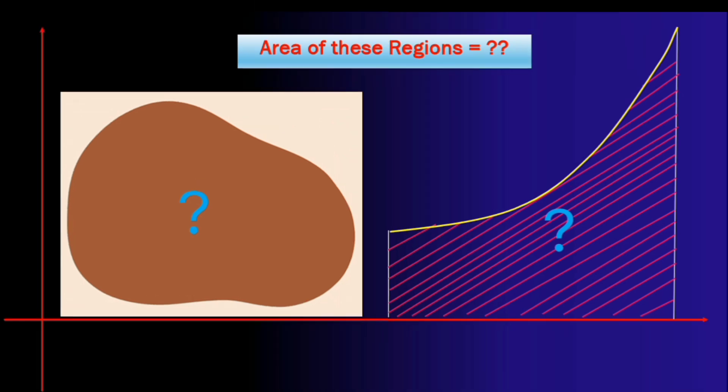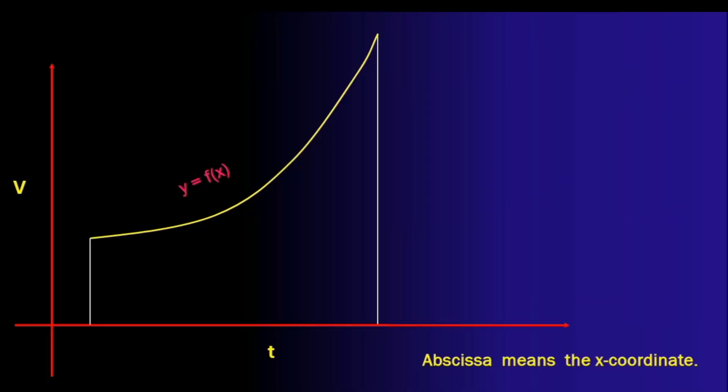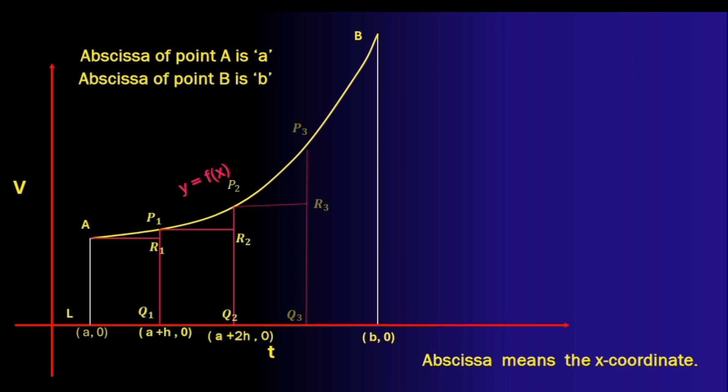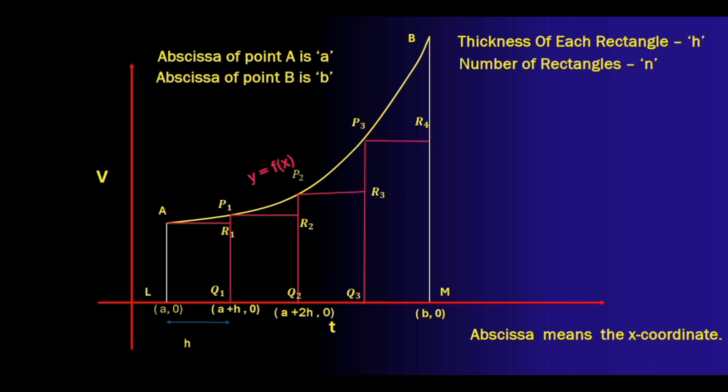Let's take the same curve and name it as y equal to f of x. Let the starting point be a and the ending point be b. Now the x coordinate of a or the abscissa of a let it be small a and the abscissa of b let it be as small b. So what we are going to do is divide the region under the curve into rectangles of equal thickness. So let the thickness of each rectangle be h. Now if the number of rectangles is n we can easily find out that h is equal to b minus a by n.